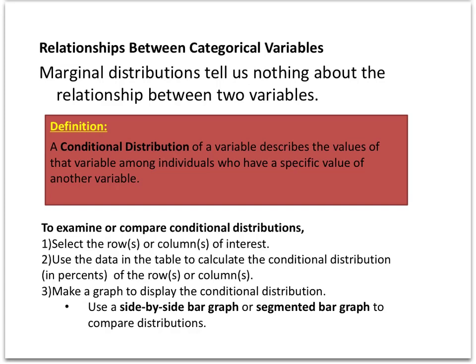A conditional distribution looks at those categories and compares them. We look at just one row or one column, calculate the percentages for each one, make a graph, and try to compare. For example, here we're going to compare males to females using a side-by-side bar graph.